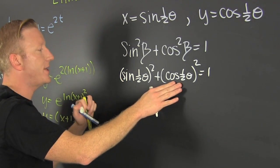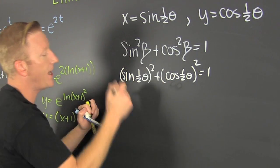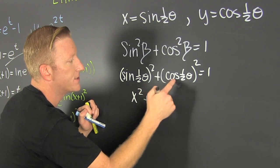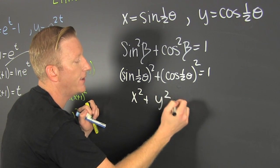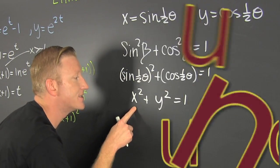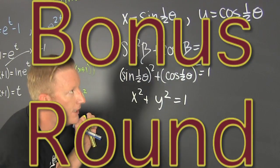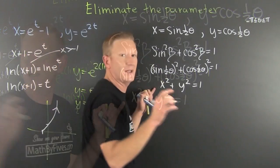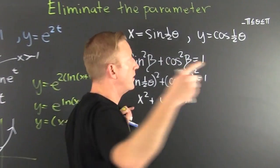And when we do that, we see that this is going to be x squared plus y squared, that's equal to one. Now what's this? It's coming full circle. It is a circle.